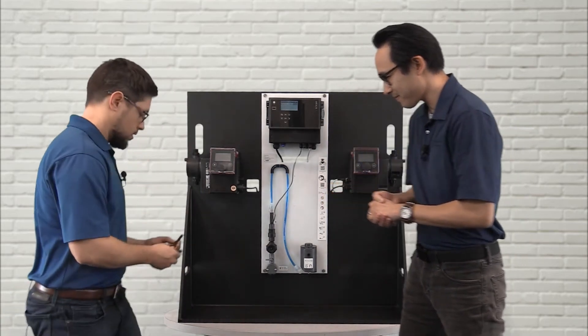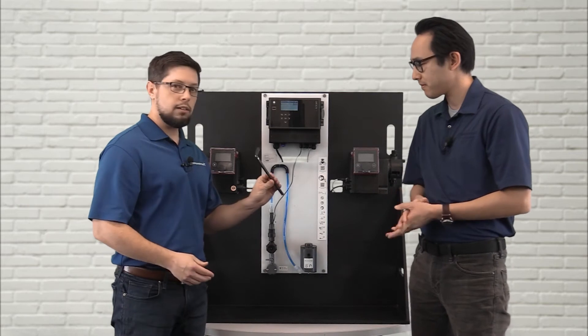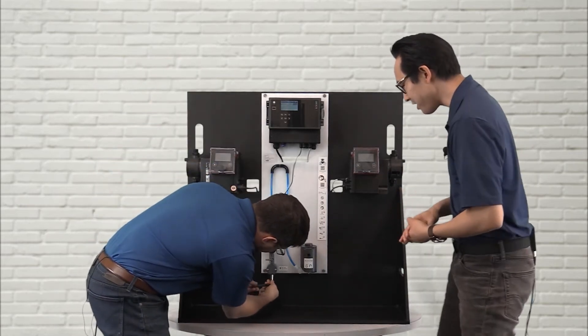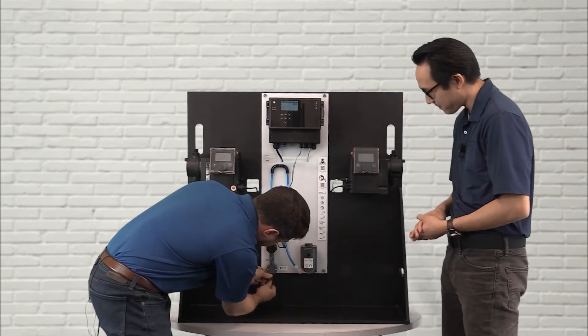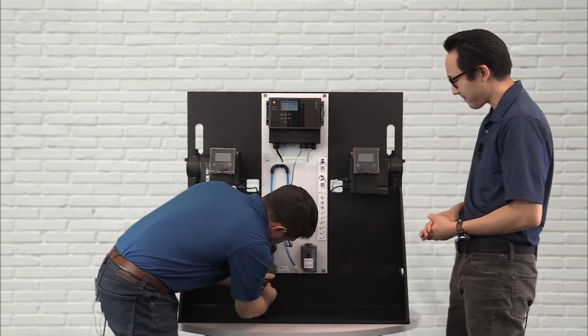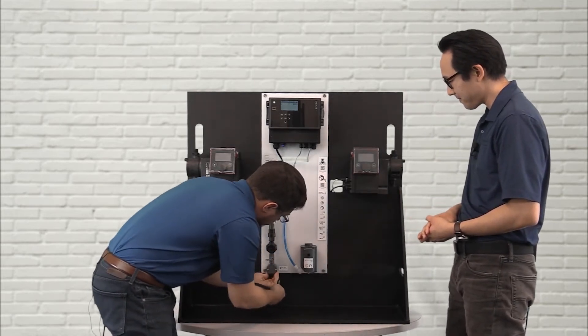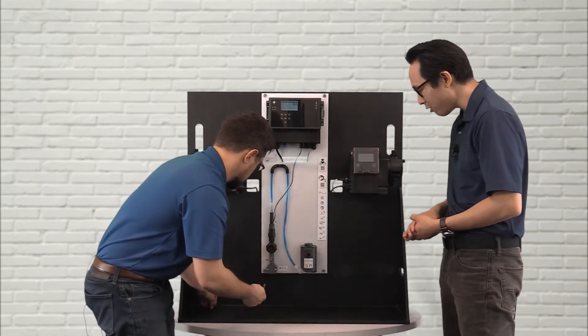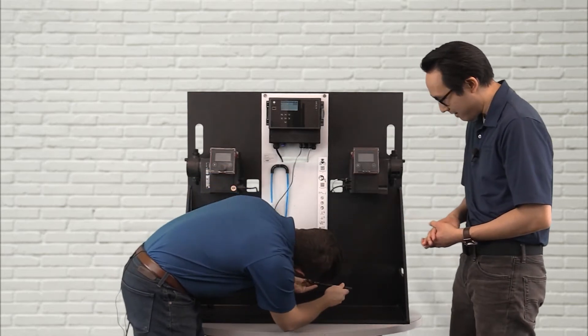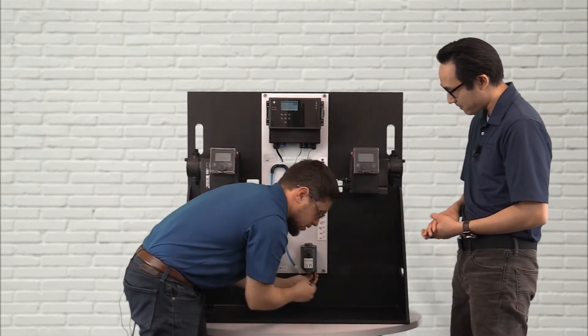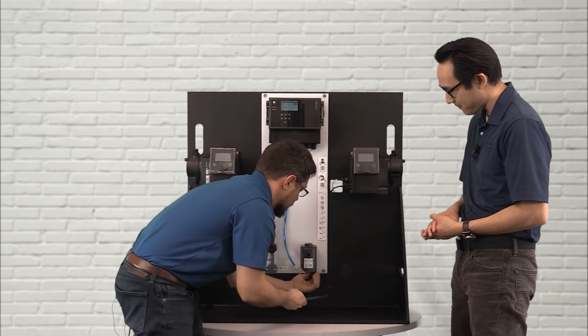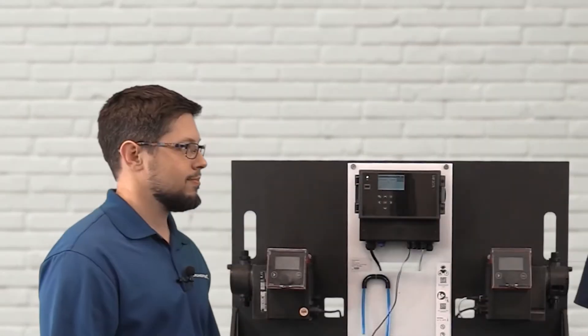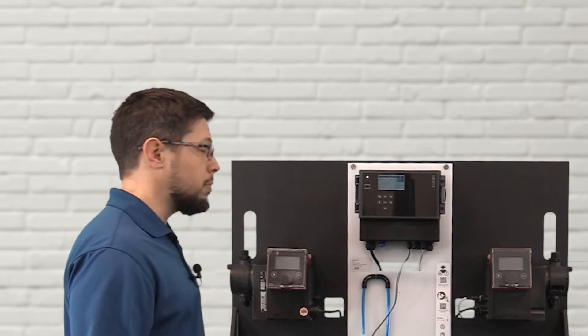I have a 10 millimeter Allen hex head. I just need to slide it in here. Once I get it loosened, it's easy to just remove by hand. Once you loosen it a little bit, you can do the rest by hand. And the same for the outlet. We got the plugs removed.